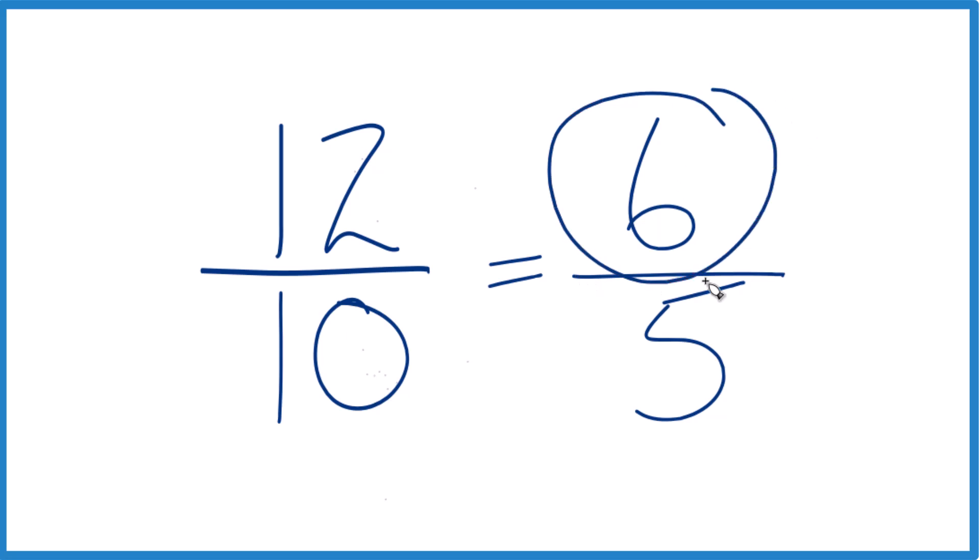Because the numerator is larger than the denominator, this is called an improper fraction. Let's write it as a mixed number.